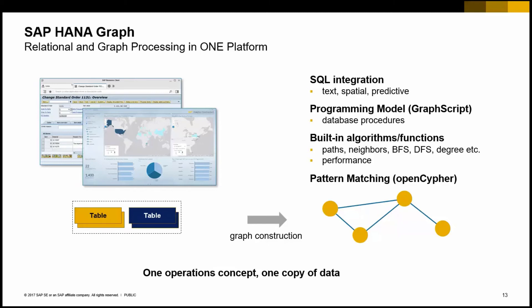There are also built-in algorithms and functions supporting atomic graph operations: finding shortest paths, finding neighborhoods of a node or set of nodes, breadth-first search traversal, and depth-first search traversal. Additionally, there is a programming model called GraphScript that lets you write database procedures leveraging these graph features and working on graph data types.